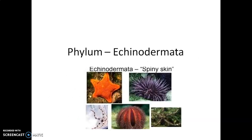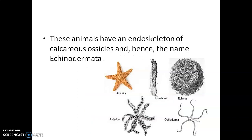The last phylum in non-chordates is phylum Echinodermata. The term means organisms with spiny skin, and from the diagram it is clear that they have spiny skin on their body. These animals have an endoskeleton of calcareous ossicles, hence the name Echinodermata. Examples include Asterias (starfish), Holothuria, Echinus, Ophioderma, and Antedon.